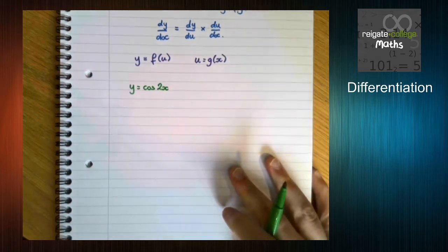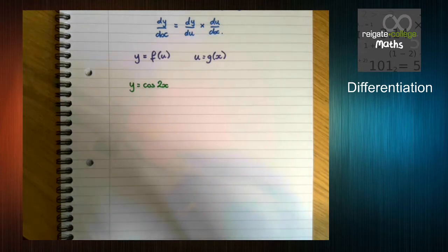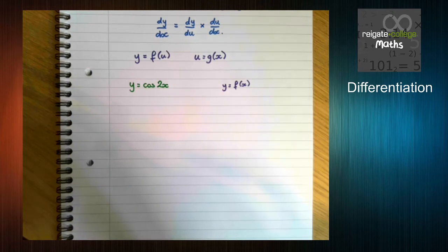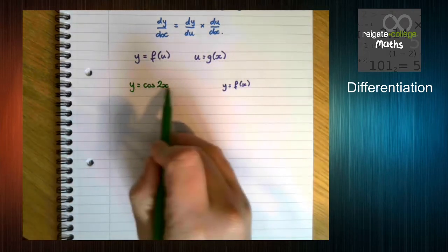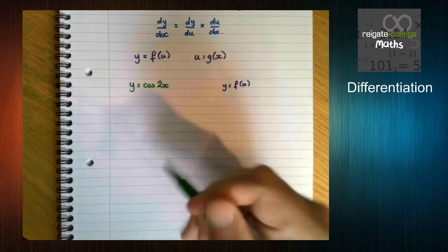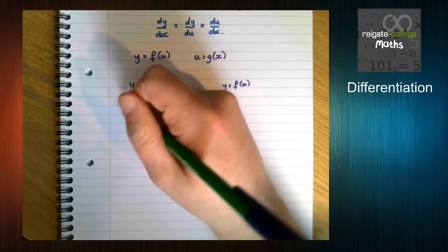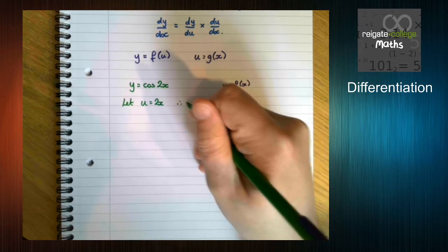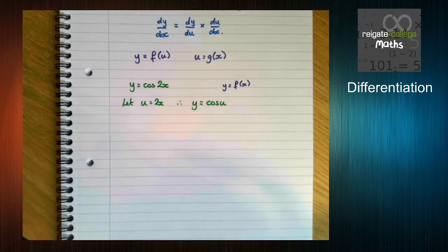On a very basic level, so we have y as a function of x currently. For the chain rule to work, what we need to change is make this y as a function of u. So u is going to be 2x.